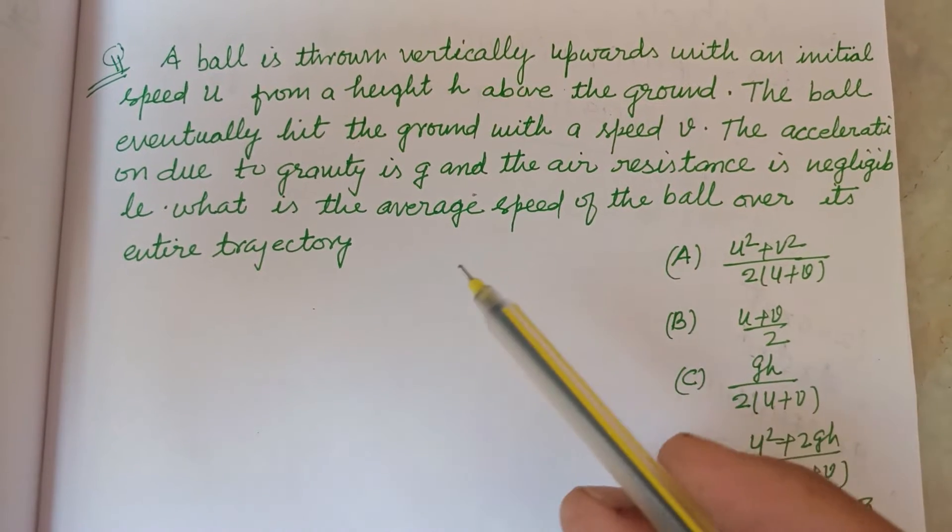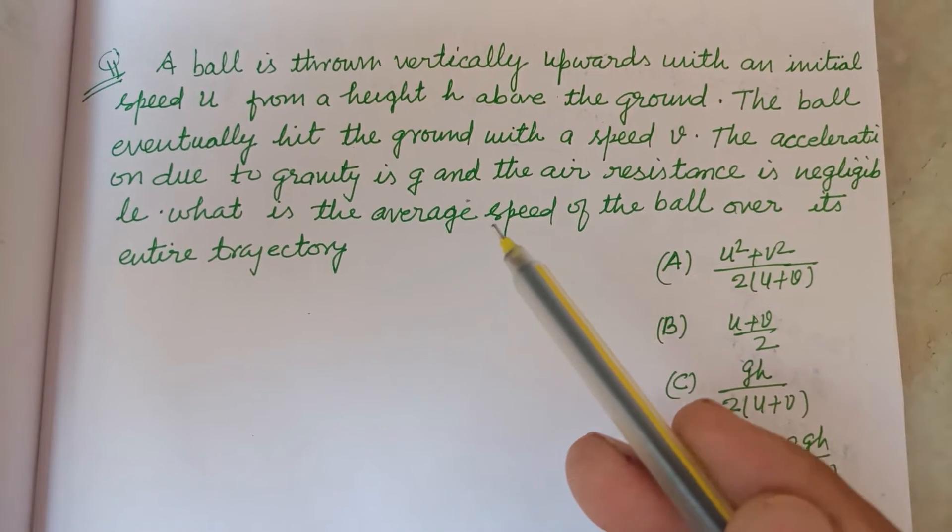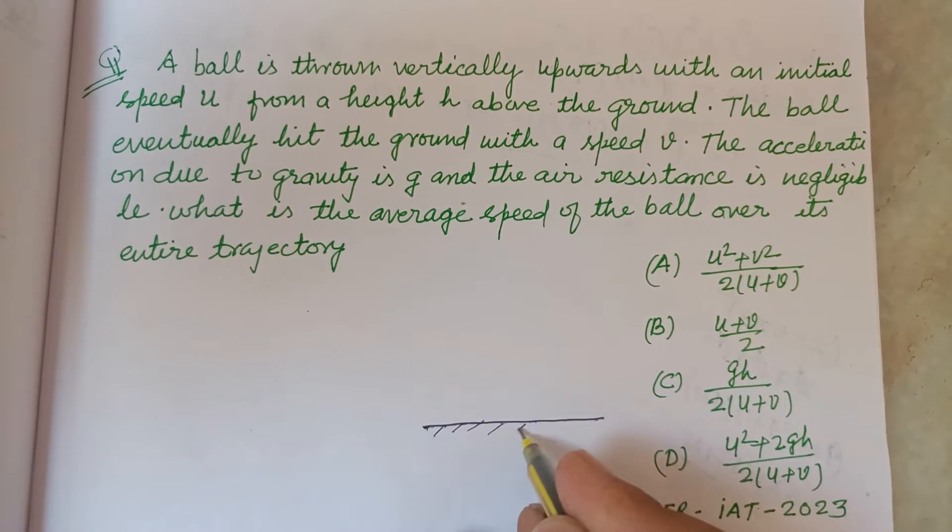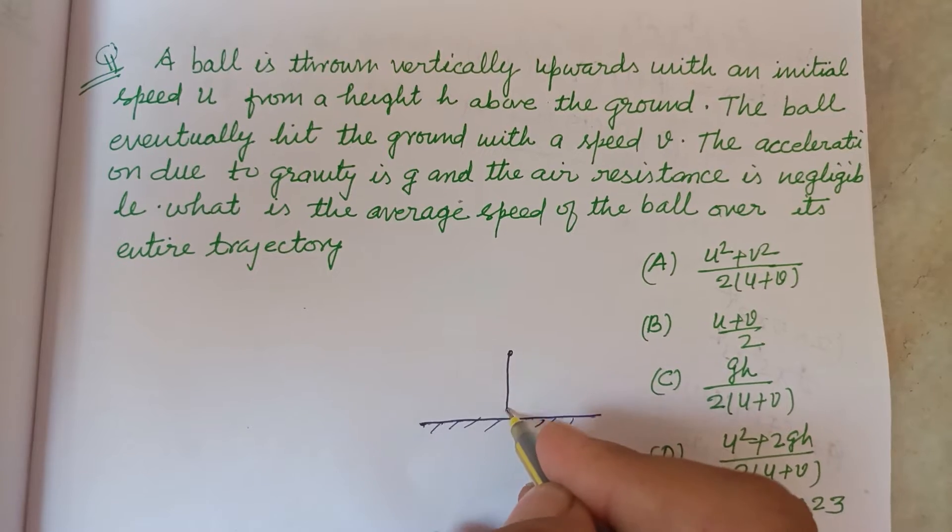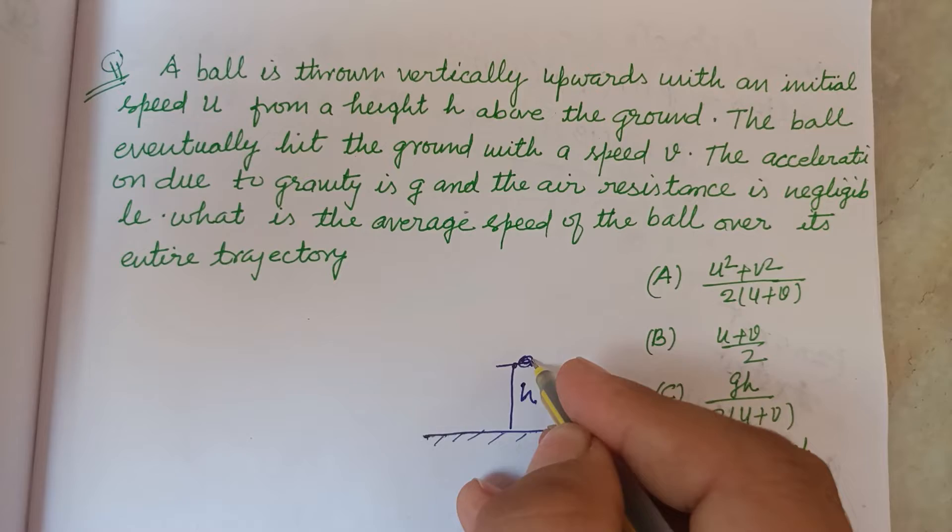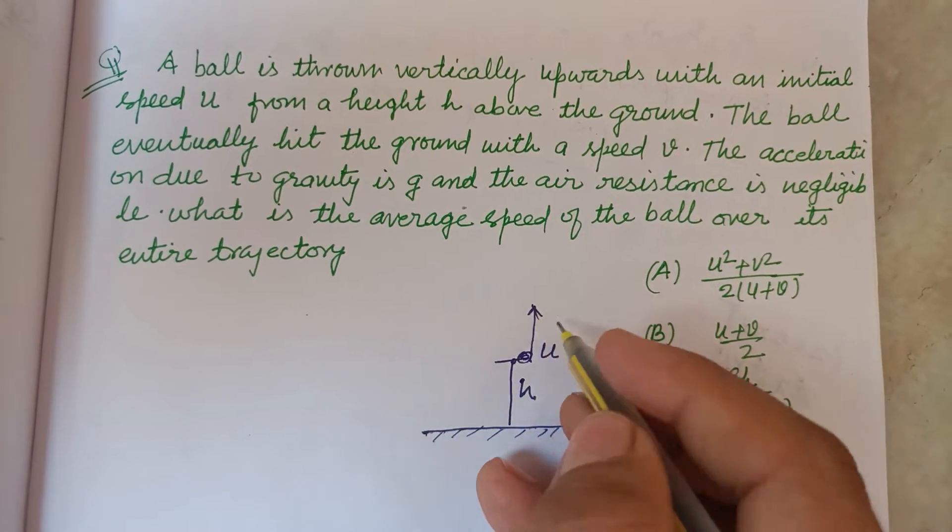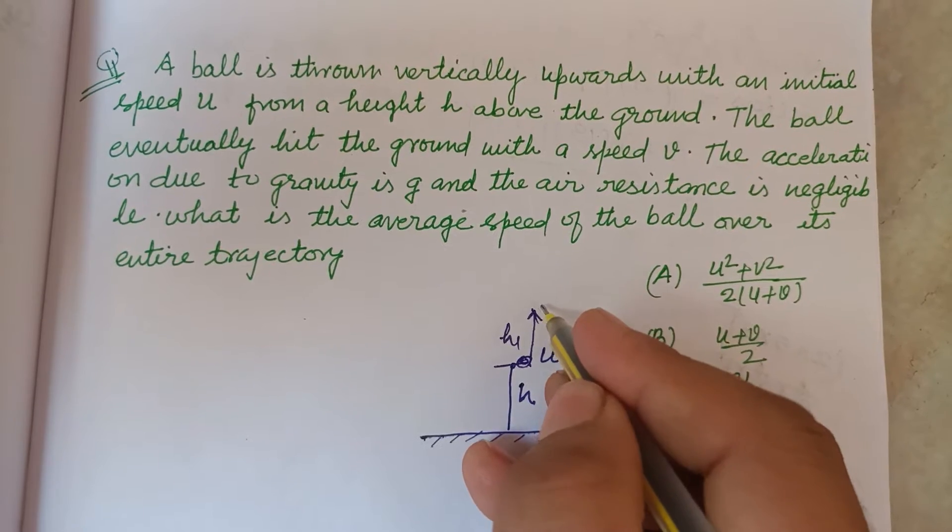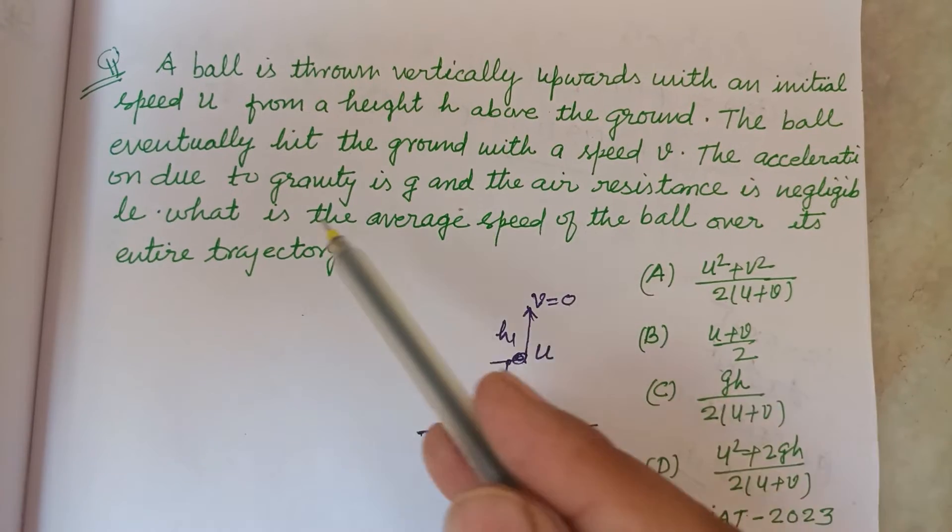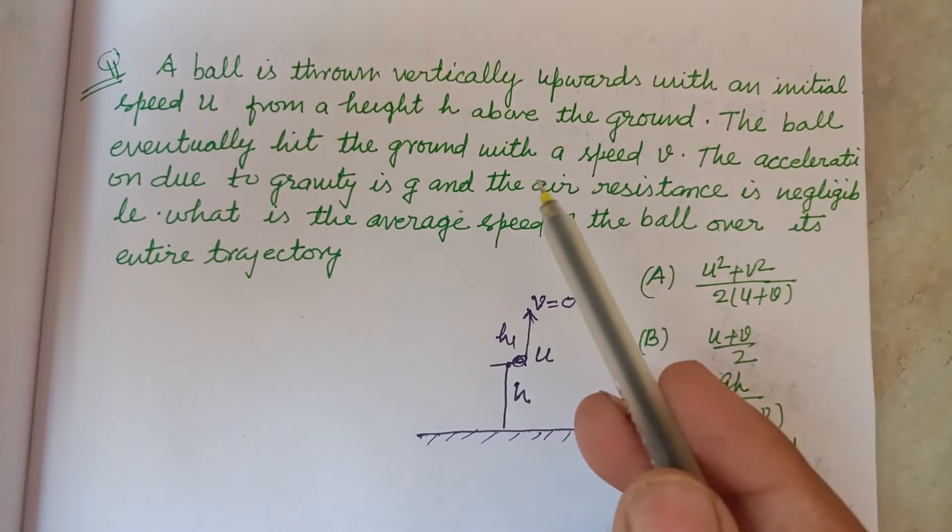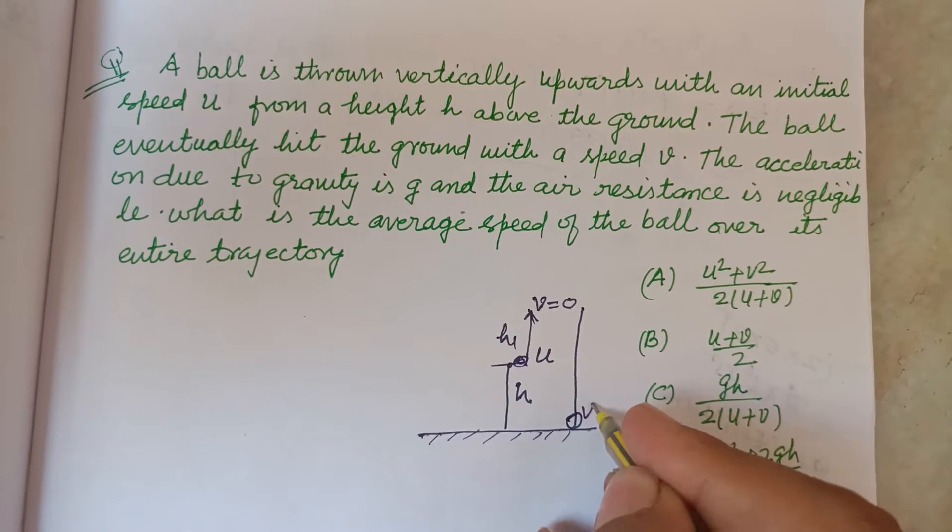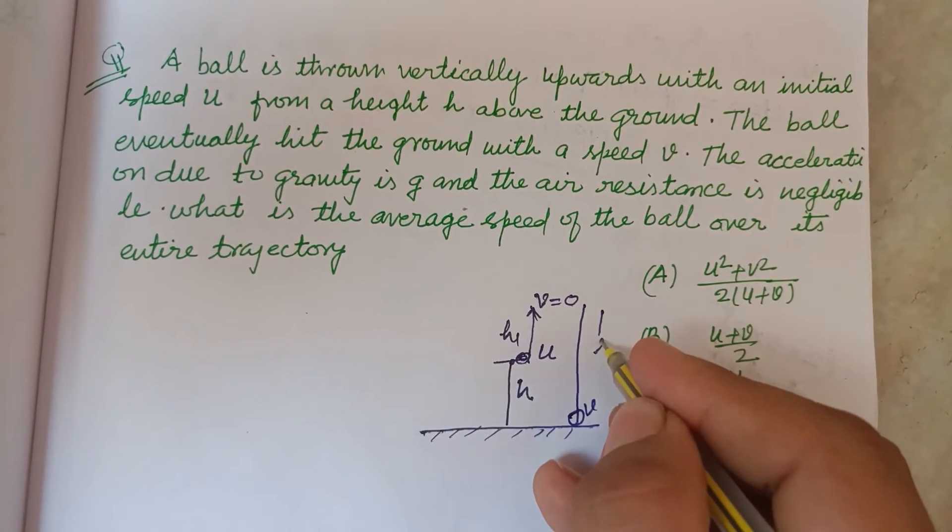A ball is thrown vertically upward with an initial speed U from a height above the ground. So this is ground level and a ball is thrown from a height here with velocity U. It reaches a height h1 until its final velocity becomes 0. The ball eventually hits the ground with a speed V after free falling, covering a height h2.